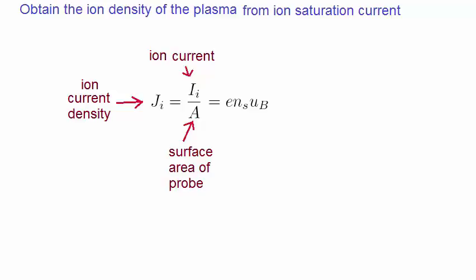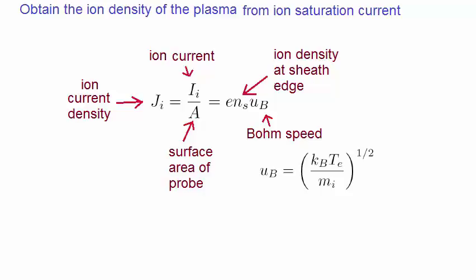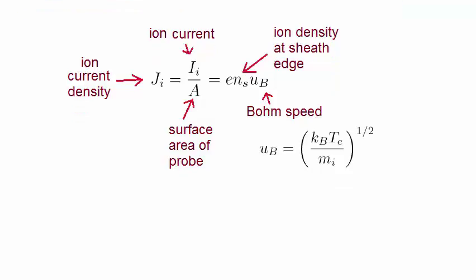We can write the current density in this expression as we've seen before, where Ns is the ion density at the sheath edge, and Ub is the Bohm speed, which we've seen before as being this expression. If we now substitute the expression for the Bohm speed, we can now write the ion current as follows.